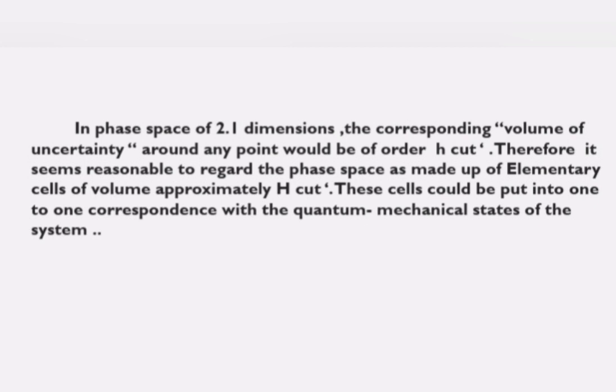This phase space is called elementary cells. The phase space is made up of elementary cells of volume approximately ħ. These elementary cells are put into one-to-one correspondence with the quantum mechanical states of the system, corresponding to two dimensions.